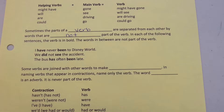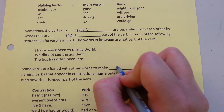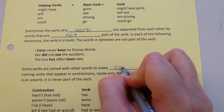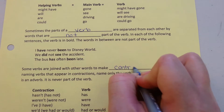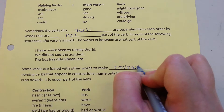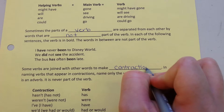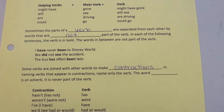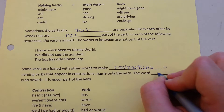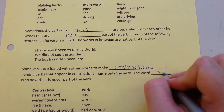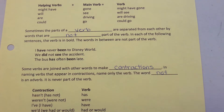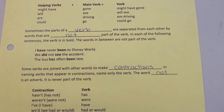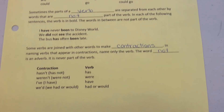Some verbs are joined with other words to make contractions. In naming verbs that appear in contractions, name only the verb. The word "not" is an adverb. It's never part of the verb.